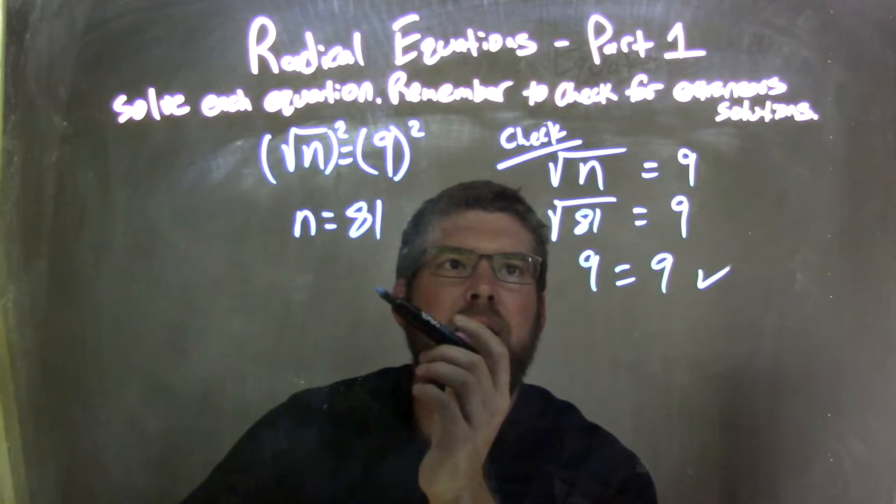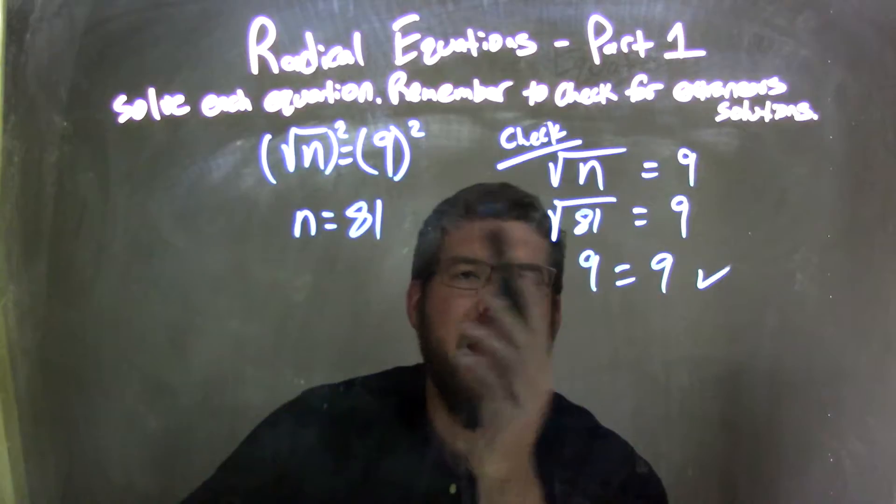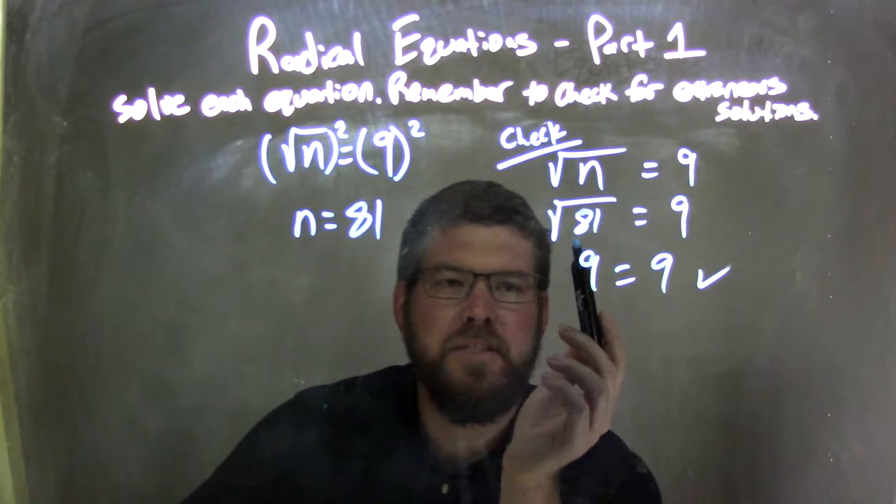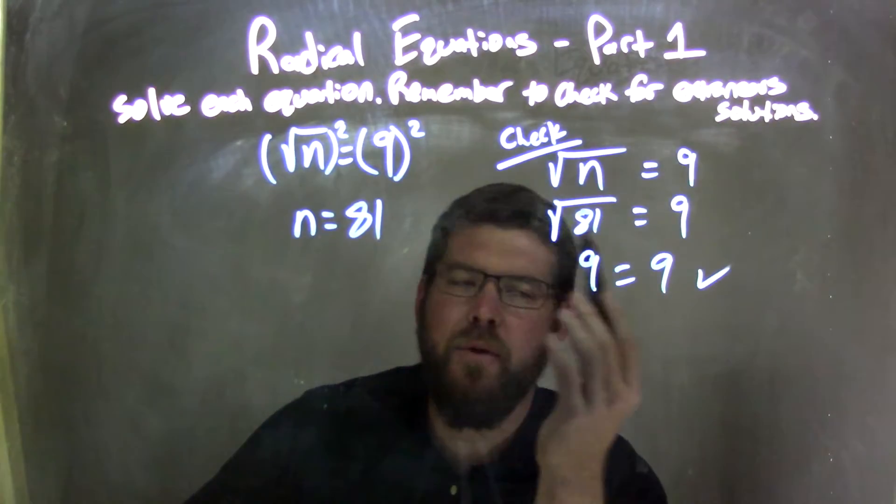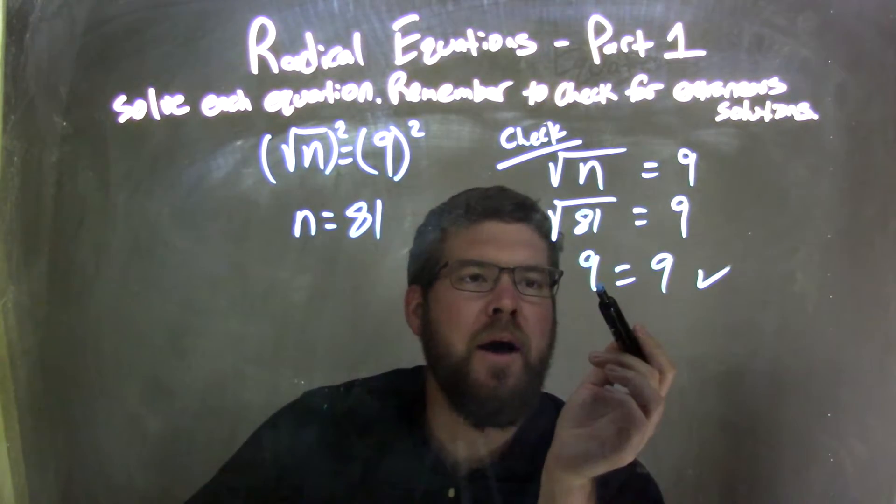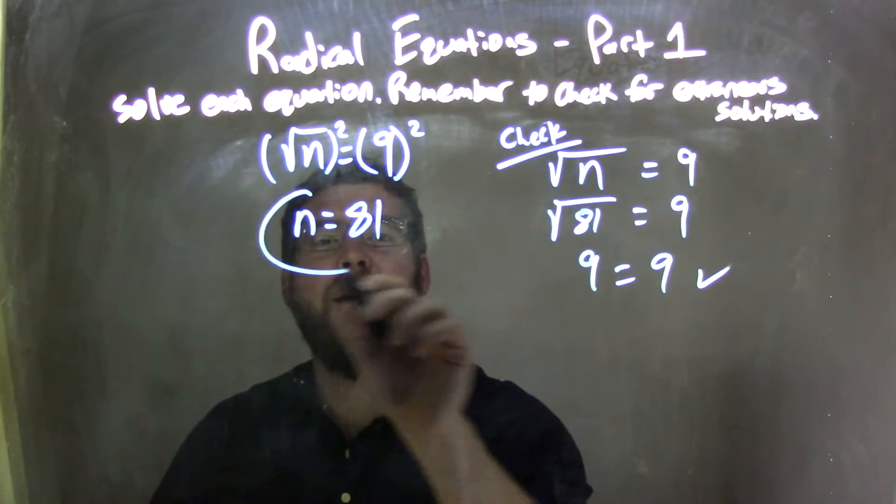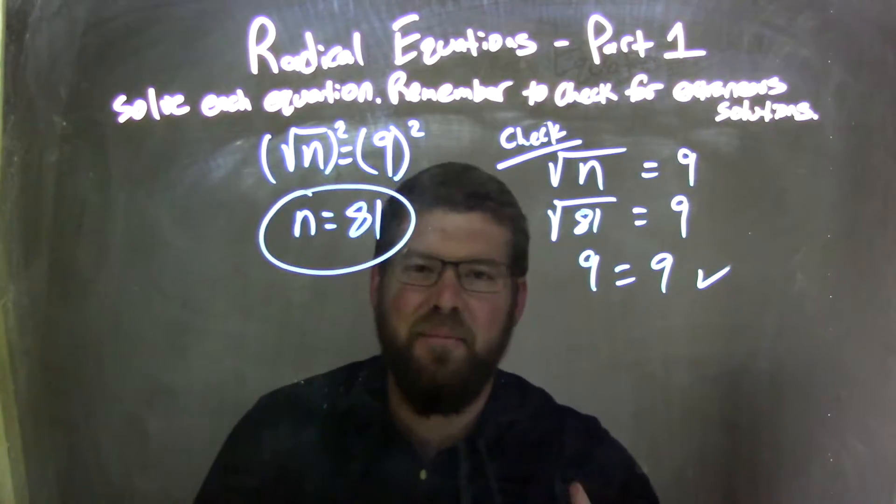From there, I had to check, so I took my original equation. I then plugged 81 in for n, simplify, keeping both parts of the equation on its own respective side, leaving me with square root of 81 being 9, and 9 does equal 9. That's a true statement. So, I can say that n equals 81 is my final answer.